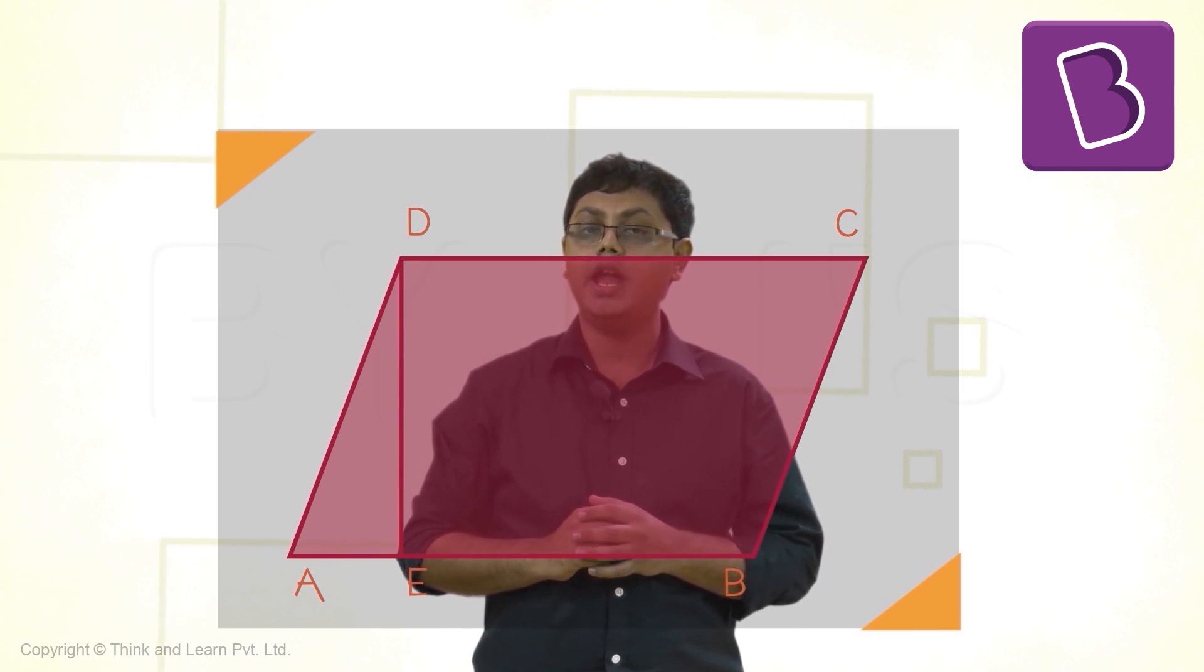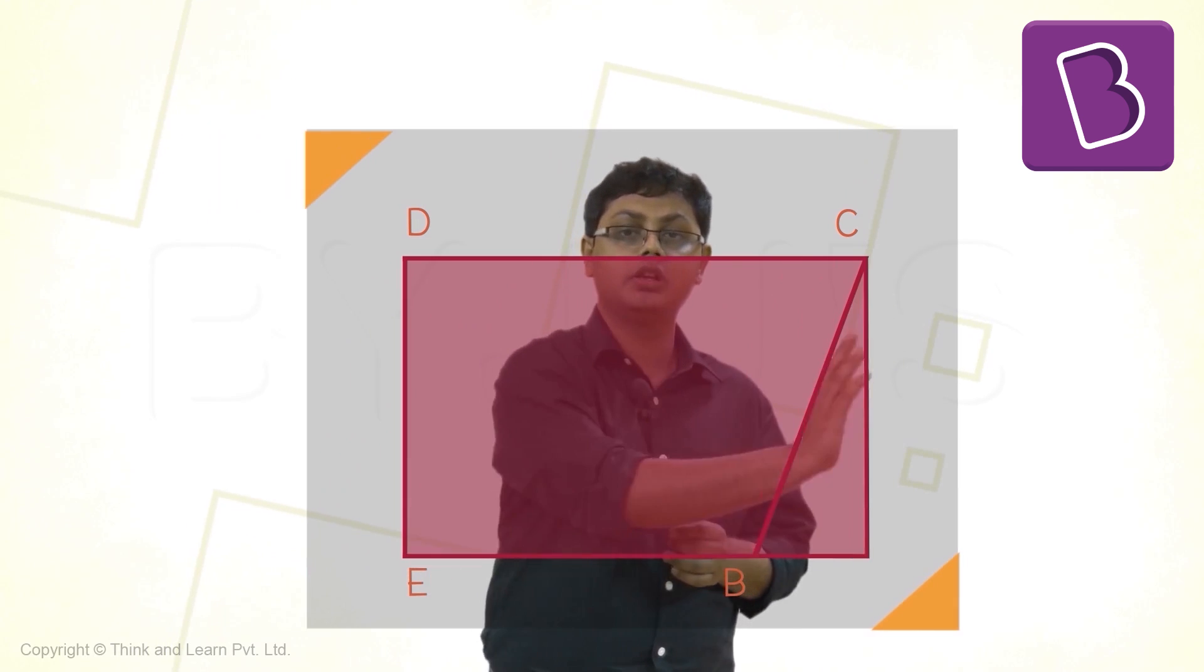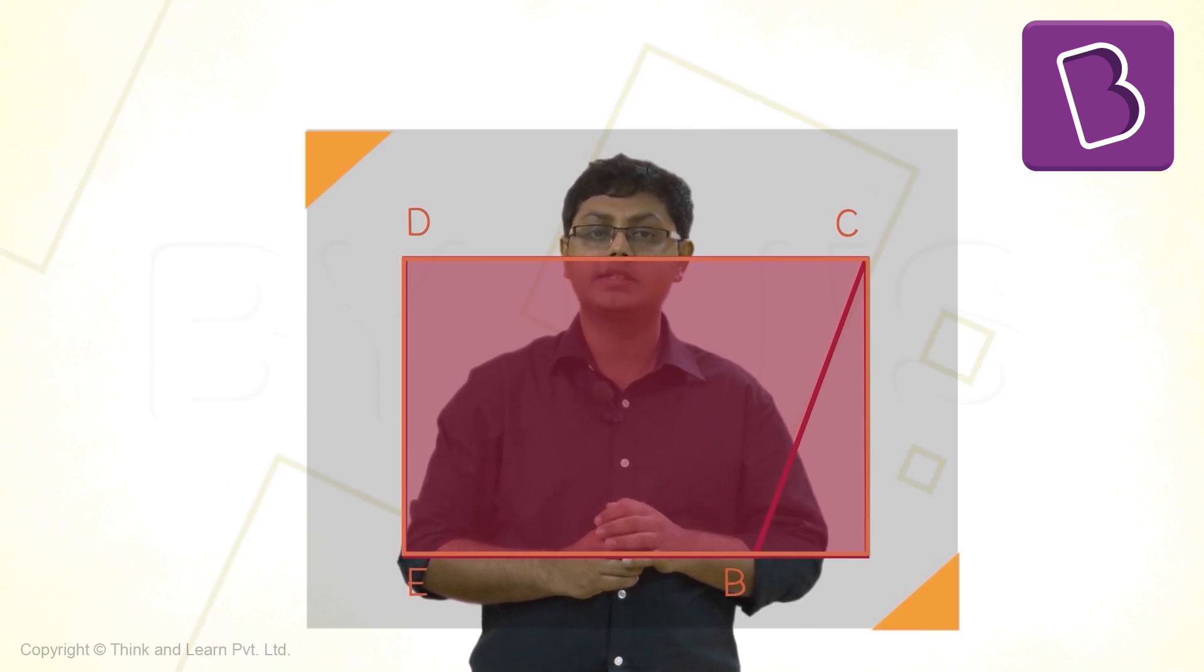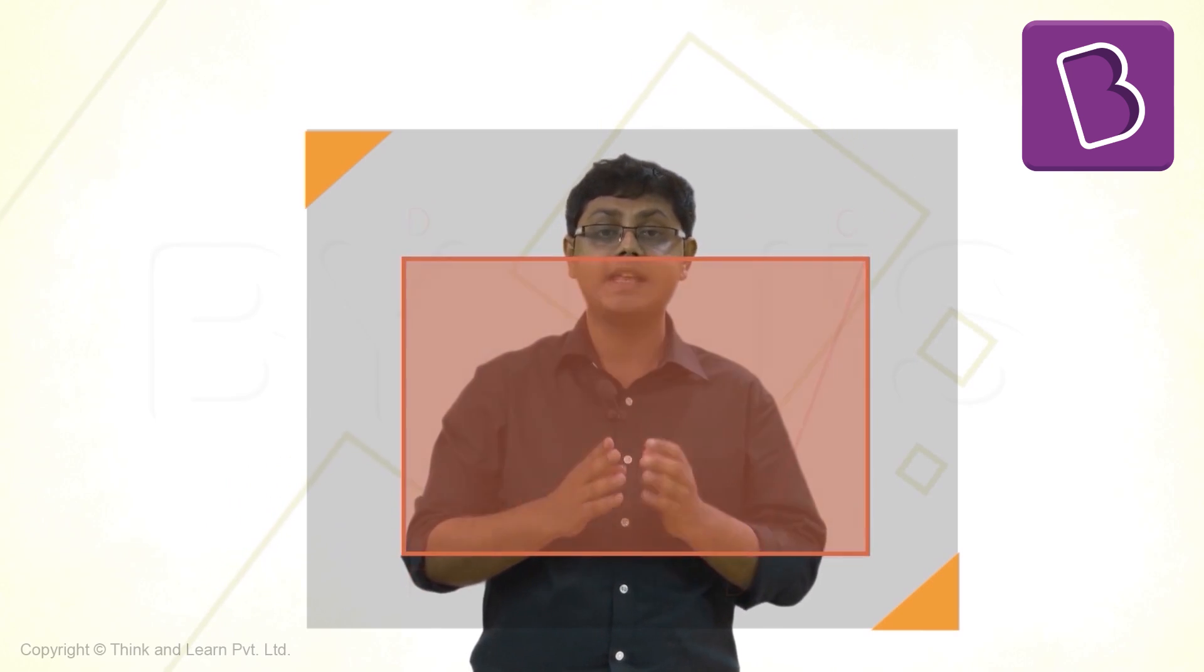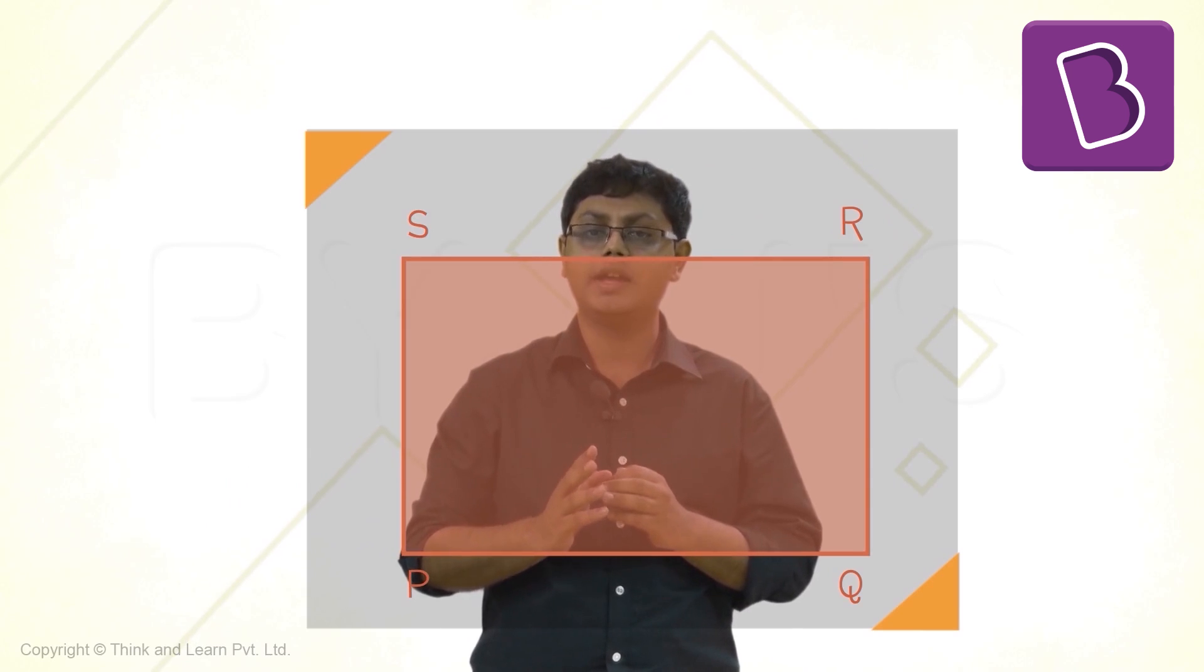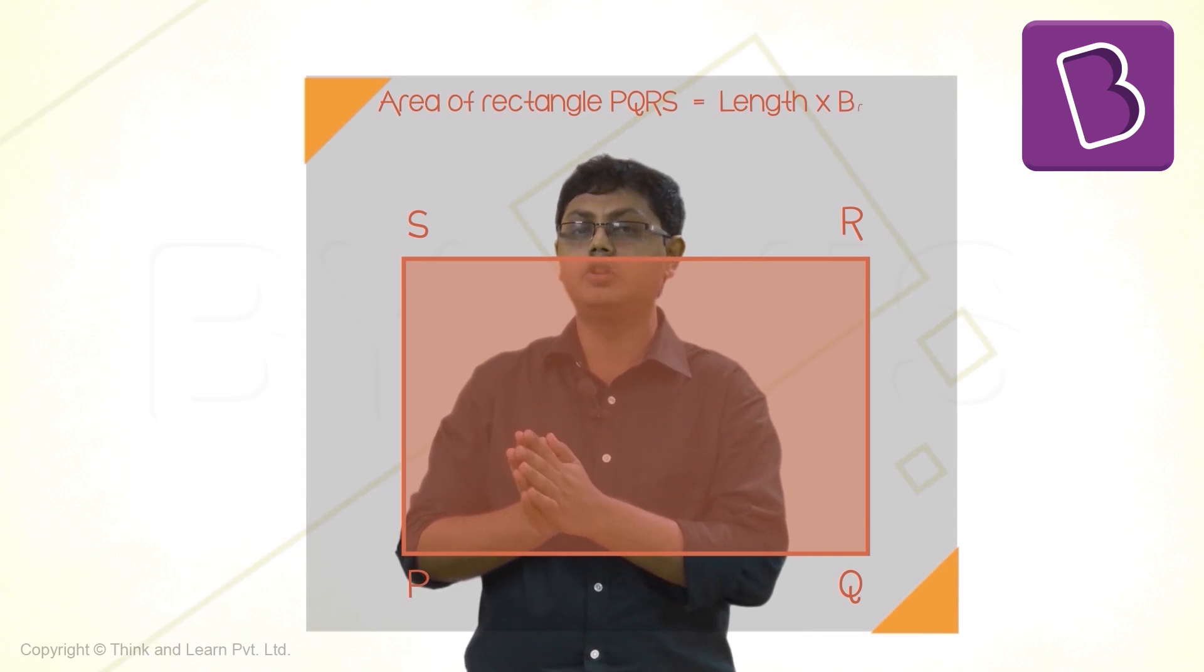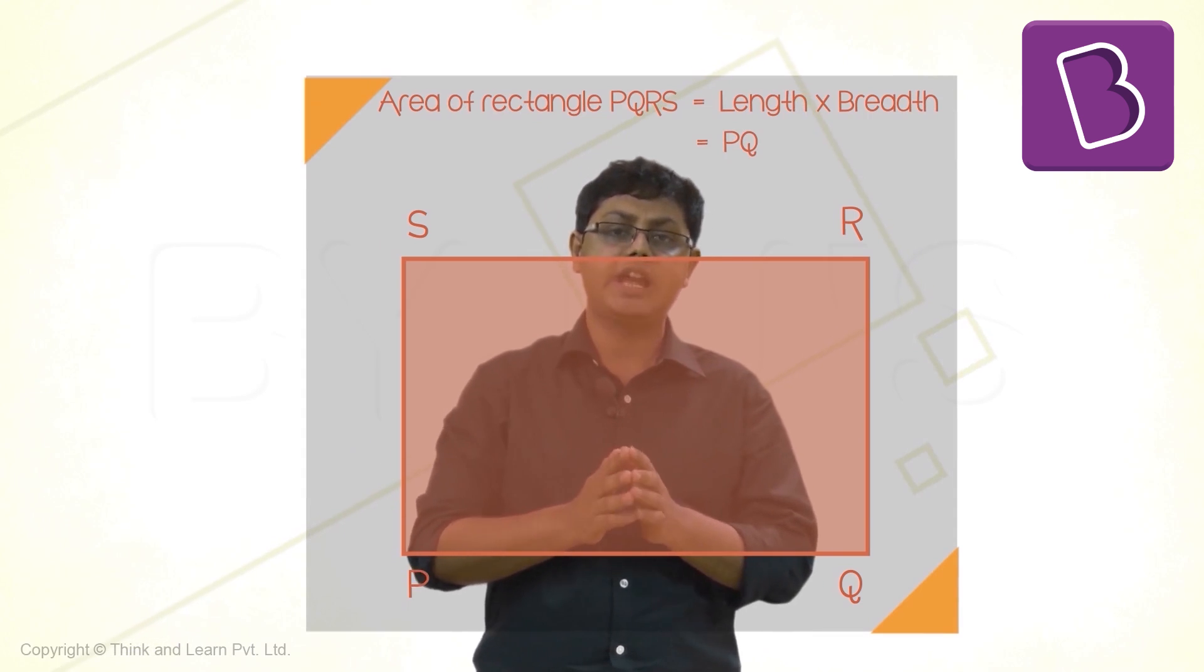Now cut triangle A, E, D from the parallelogram and move it towards the right. Wait, did we get a rectangle? Yes, we did. It is a rectangle. Let's rename it as P, Q, R, S. So the area of this rectangle will be equivalent to length times breadth, that is PQ times QR.